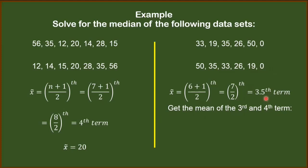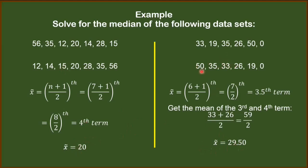For instance, if you find the median is on the 19.5th term, you get the mean of the 19th and 20th terms. Going back to this discussion, we get the mean of the 3rd and 4th terms. The 3rd term is 33 and the 4th term is 26. Getting the mean of those two numbers: (33 + 26) / 2 = 59 / 2 = 29.50. So our median is 29.50. Just like the mean, the median can be a member or not a member of the original dataset, as long as your solution is correct.